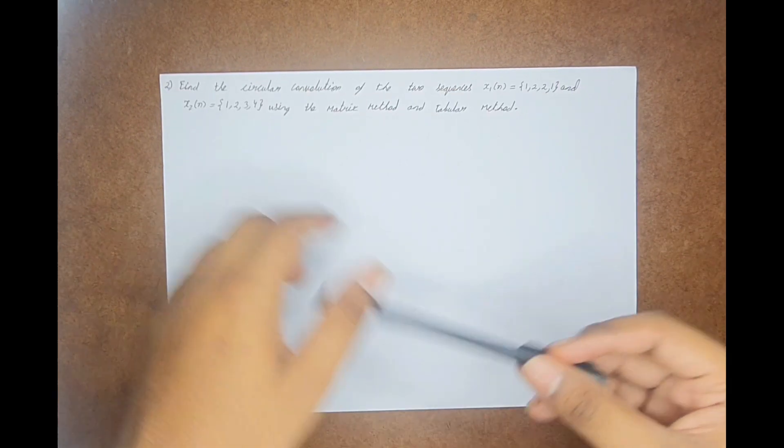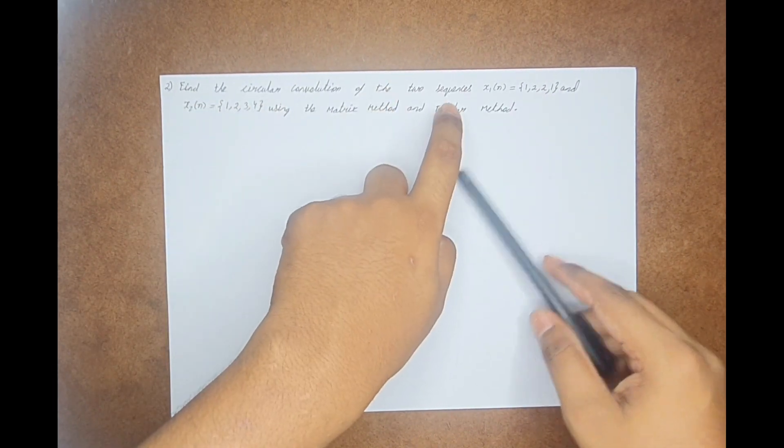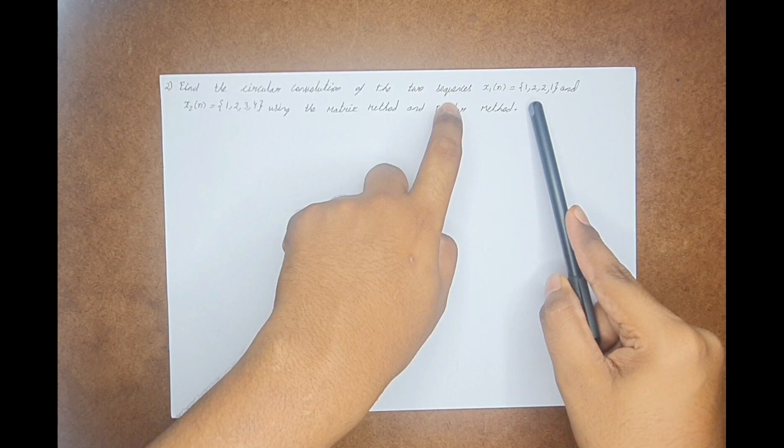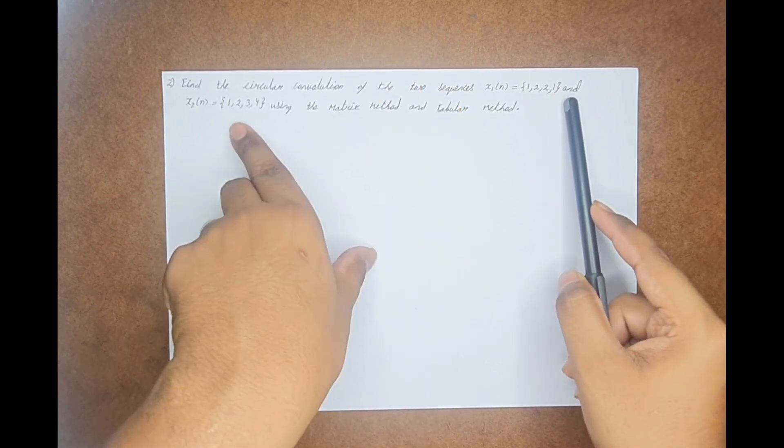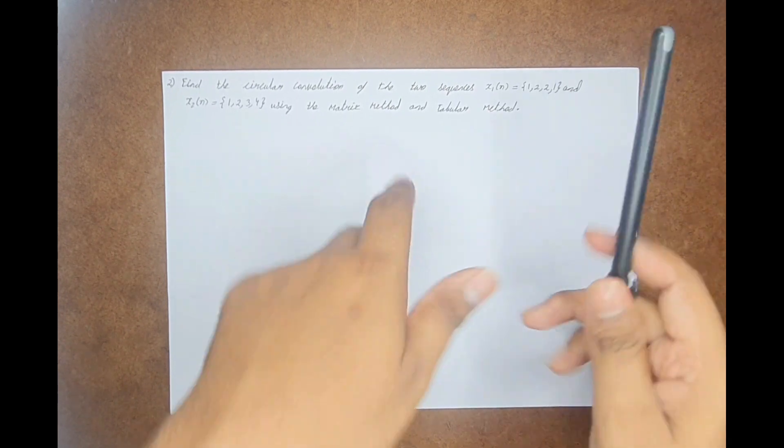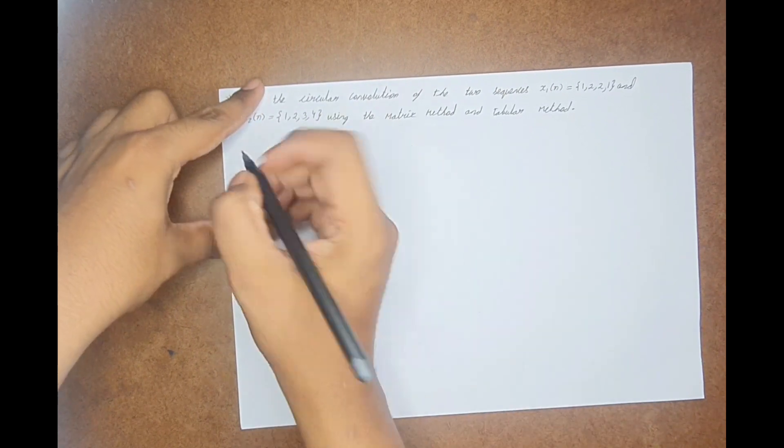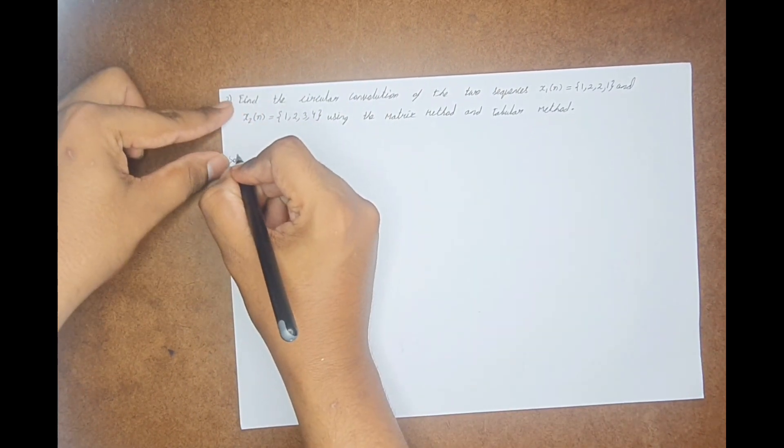First, let us see the question. The question says to find the circular convolution of the two sequences x1(n) which is 1, 2, 2, 1 and x2(n) which is 1, 2, 3, 4 using the matrix method and the tabular method. So, let us do this sum. For your convenience, I will write this as my solution.